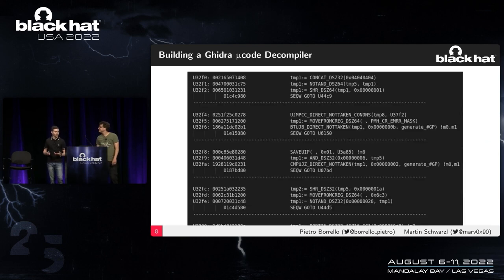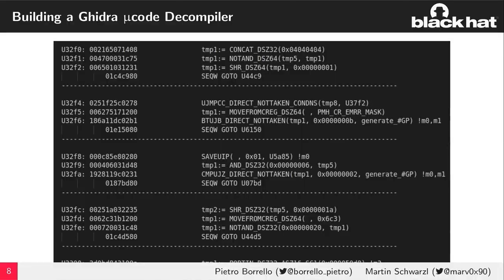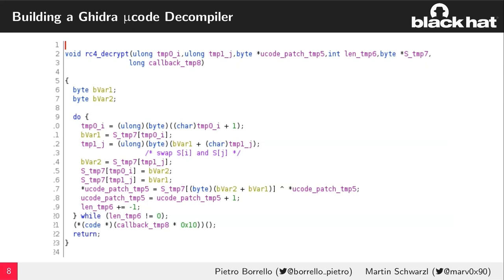The microcode is highly optimized and tangled: code blocks are shared between multiple functions, making analysis really hard. Since no compiler existed for this undocumented ISA, we built one. Here you can see the Hydra decompiler output — it looks like clean C code, and you can see the RC4 decrypt function which, as we'll show, is used in the update algorithm.